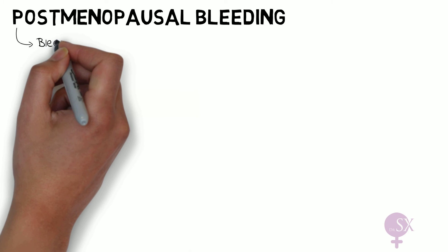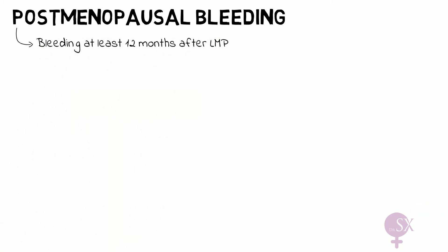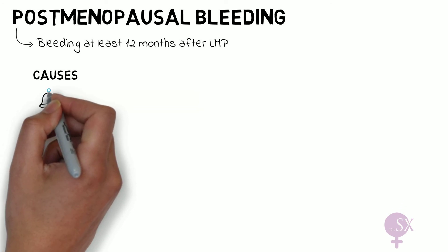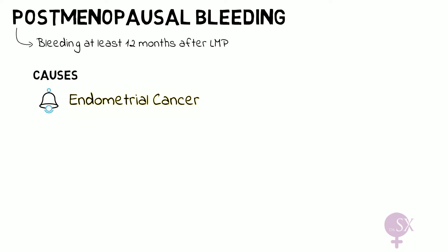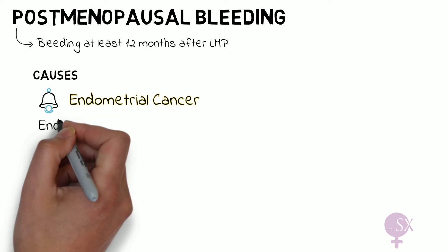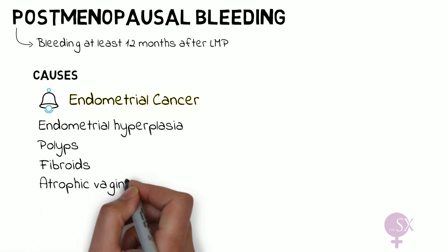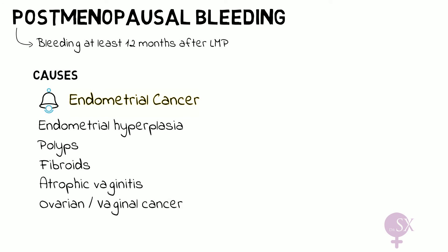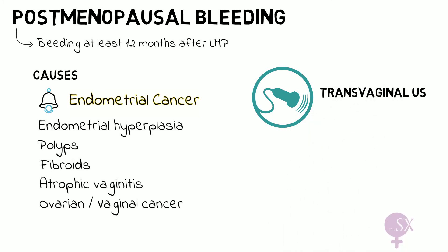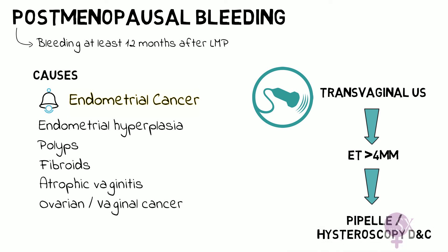Post-menopausal bleeding, or PMB, refers to bleeding occurring at least 12 months after the last menstrual period — that is, bleeding occurring after the menopause. Alarm bells should be ringing when a patient presents with PMB, and we should be thinking about endometrial cancer. Other causes of PMB include endometrial hyperplasia, polyps, fibroids, atrophic vaginitis, and ovarian and vaginal cancer. All of these patients need a transvaginal ultrasound, where we look at the endometrial thickness. If this is more than 4 mm, we need to obtain an endometrial sample.